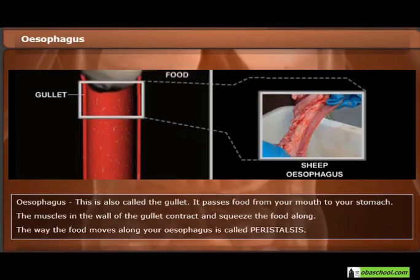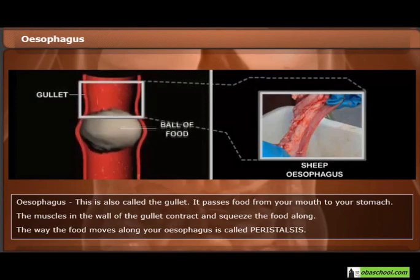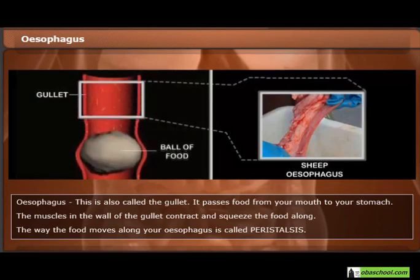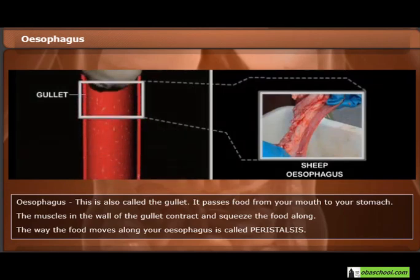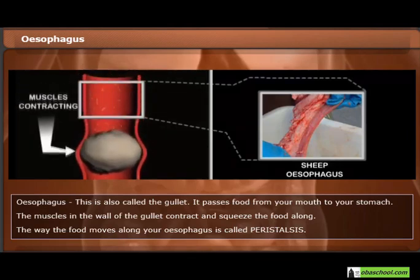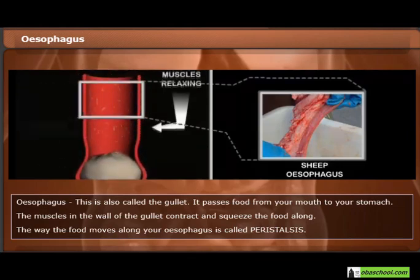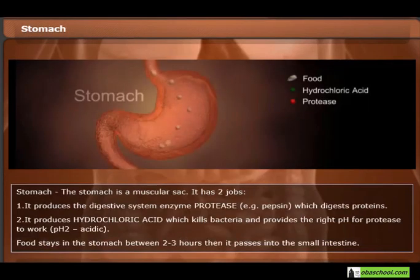The oesophagus, also called the gullet, passes food from your mouth to your stomach. The muscles in the wall of the gullet contract and squeeze the food along. The way food moves along your oesophagus is called peristalsis.